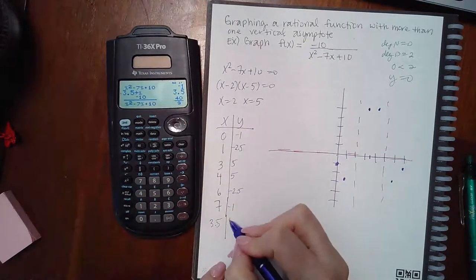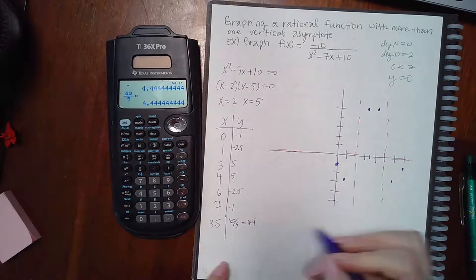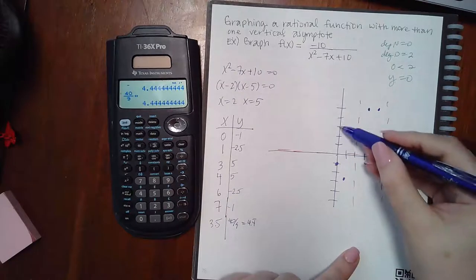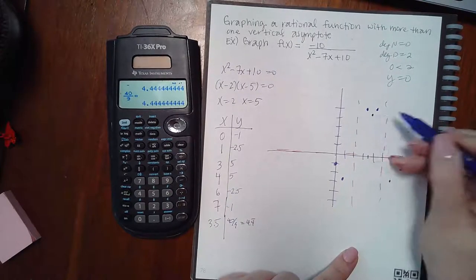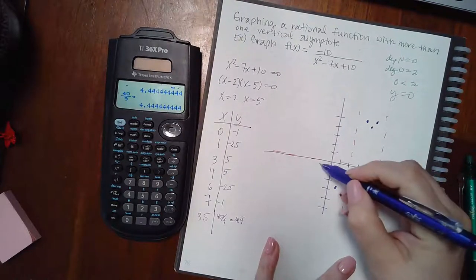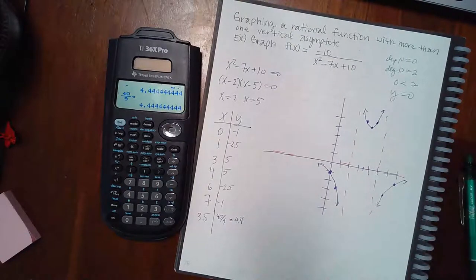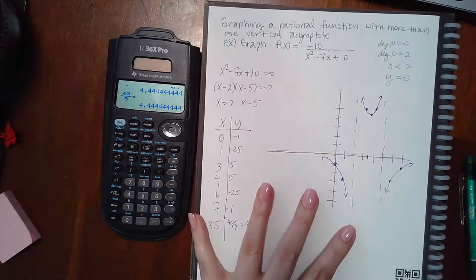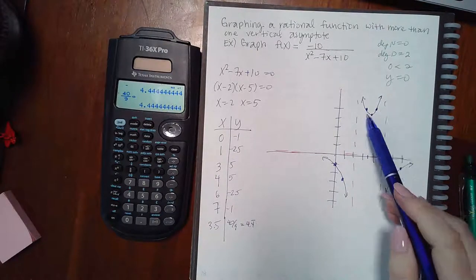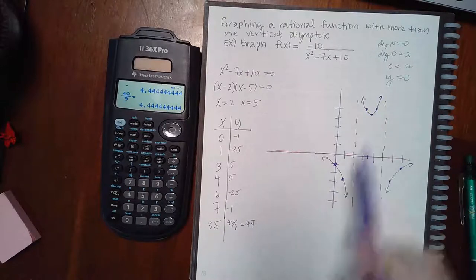For x = 3.5, I get 40/9 which is approximately 4.4. So the curve goes upward in the middle between the asymptotes, looking like a parabola. The graphing tool in ALEKS should automatically know to draw it that way — I just plugged in the extra point to confirm.